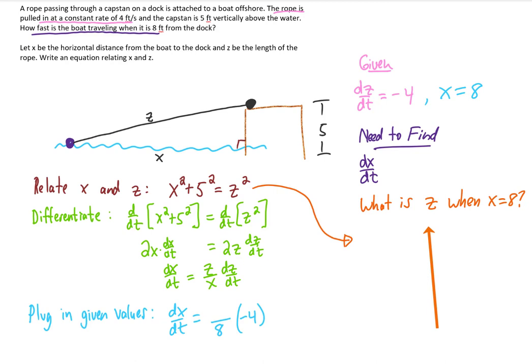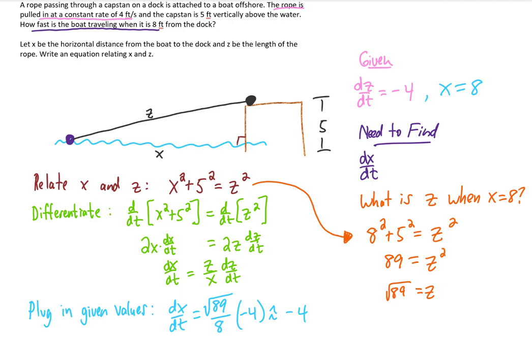Substituting in x equals 8 gives us this. Adding 8 squared plus 5 squared gives us 89. And taking a square root gives us that our z value is the square root of 89 feet. So I'm going to plug that result in down here for our z. And plugging this result into our calculator, that gives us an answer of approximately negative 4.72, that would be feet per second.